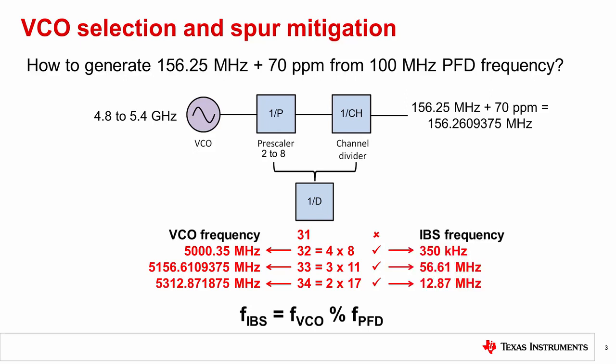The difference between D equal to 33 and D equal to 34 may not be so obvious. But with D equal to 32, we will clearly see a 350 kHz integer boundary spur when viewing on a phase noise analyzer. Therefore, the divider value should not be set to 32. In general, the integer boundary spur frequency should be at least 10 times the PLL loop bandwidth, which is typically less than 250 kHz, for the spur to be well attenuated by the loop filter.